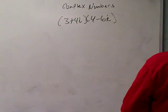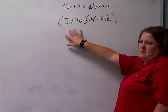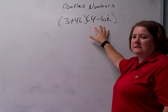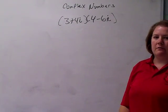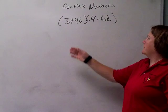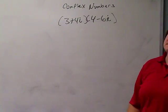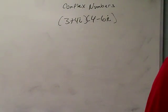Alright, complex numbers here. This says 3 plus 4i times 4 minus 6i. I want you to simplify that and give your answer in standard form.